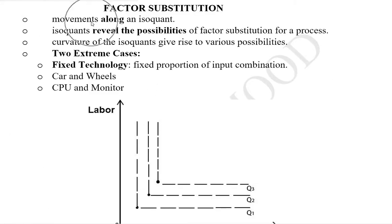It's about the movement along the isoquant that we are trying to observe, because the factor substitution happens during the movement along the curve where the labor and capital combinations change. The isoquants basically reveal the possibilities of factor substitution for a process of production.